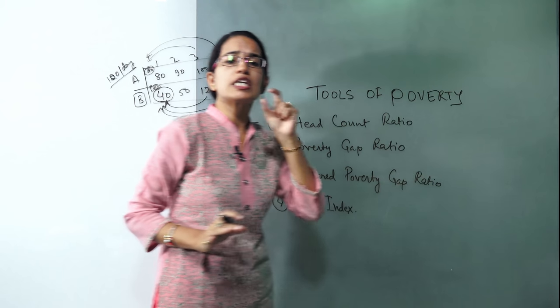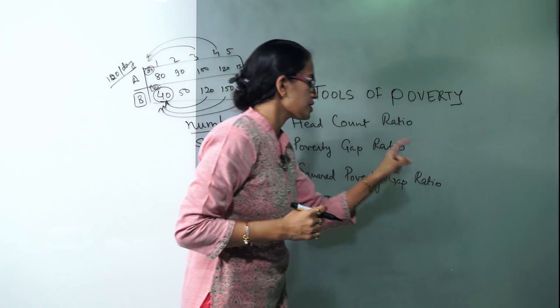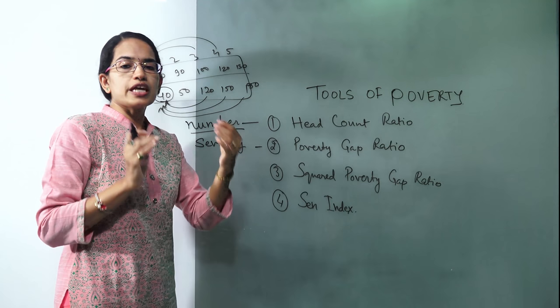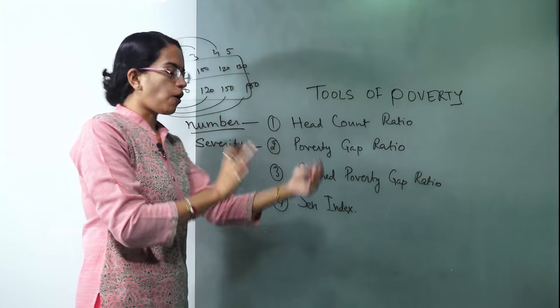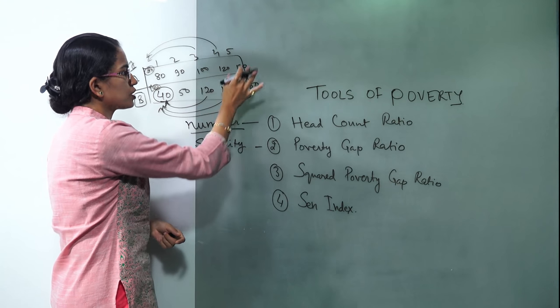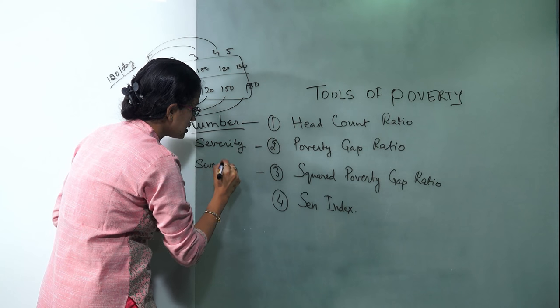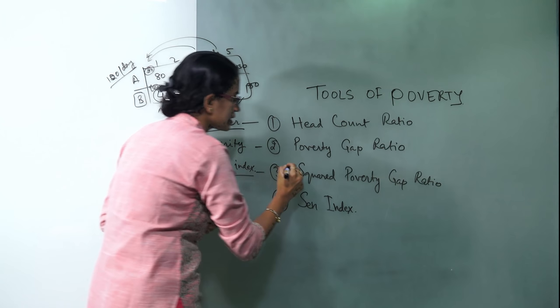When we talk about square poverty gap ratio, basically what we do is we add or sum up the square of the poverty gaps that has come through the various findings. Therefore, this is also known as the severity index because it's assessing the same poverty gap ratio but in a more severe form.